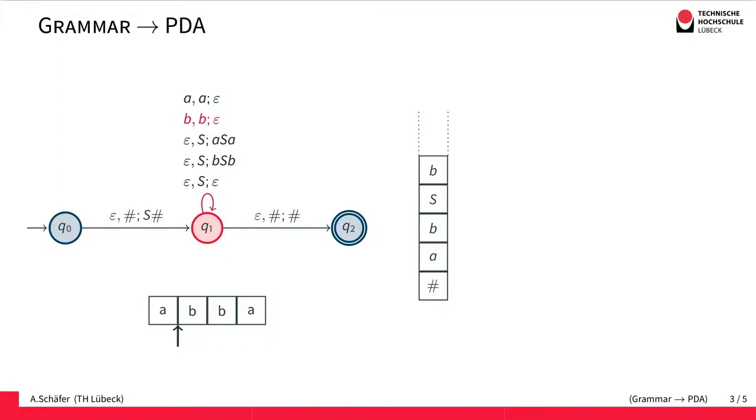Now again, we have a B as the topmost symbol and we do a matching transition. So the PDA matches the input against the stack top, removes the B. Now we end up with a non-terminal again as stack top.